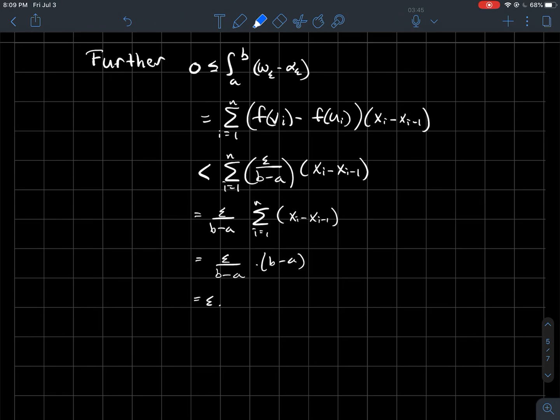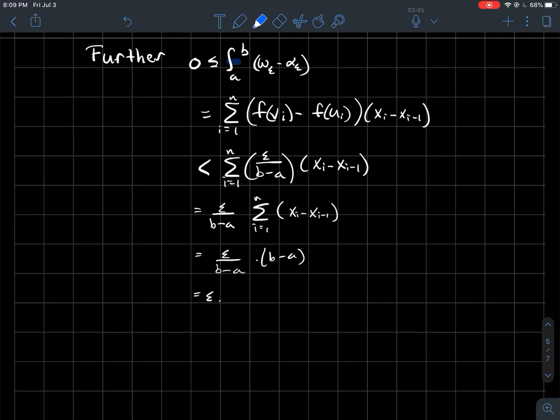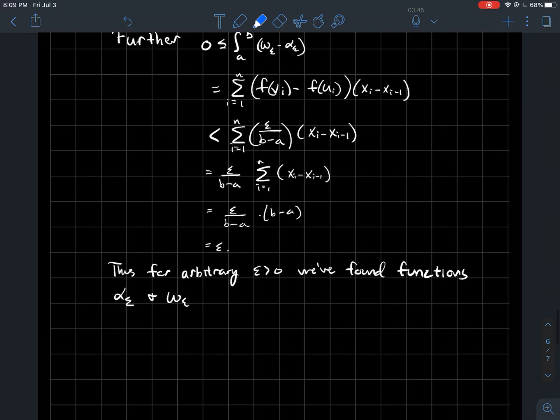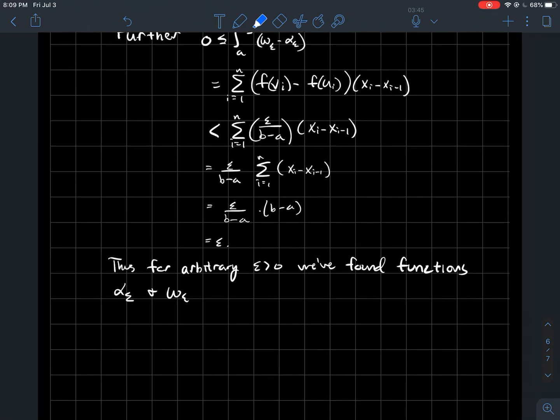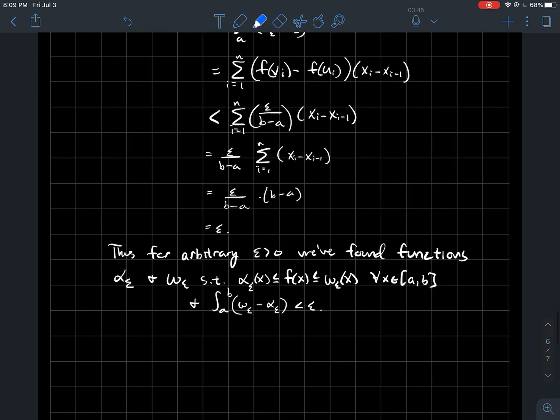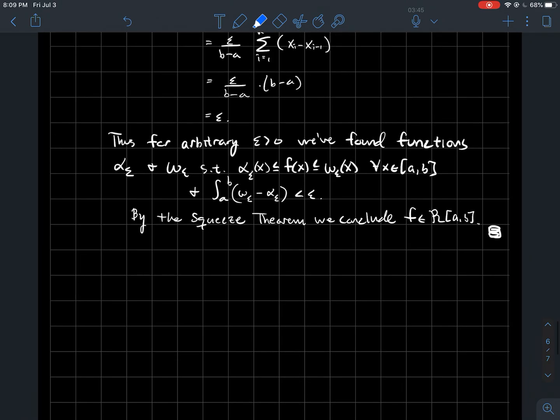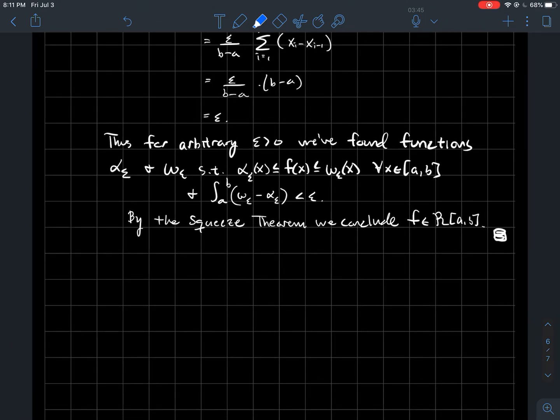Now to recap, what have I got? Oh, by the way, maybe I skipped over this in the beginning. Omega epsilon is always bigger than alpha epsilon, so I know that this integral has to be non-negative. I hope that makes sense. What have we got though? We've got that the integral of the difference between these two functions that bound F is less than epsilon. So to recap, for an arbitrary epsilon that's positive, we found two functions, alpha and omega, such that they bound F for every x in the domain of F. But then also, the integral of their difference is less than epsilon. Those are the exact conditions of the squeeze theorem, which allow us to conclude that F must be a Riemann integrable function on this interval from A to B.